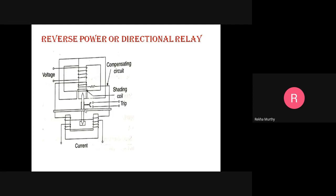In order to produce maximum torque during fault conditions when the power factor is very poor, a compensating winding and shading coils are provided. The torque produced by an induction relay is given by T = ψ1·ψ2·sin θ, which is directly proportional to I1·I2·sin θ, where ψ1 and ψ2 are the fluxes and θ is the angle between them.